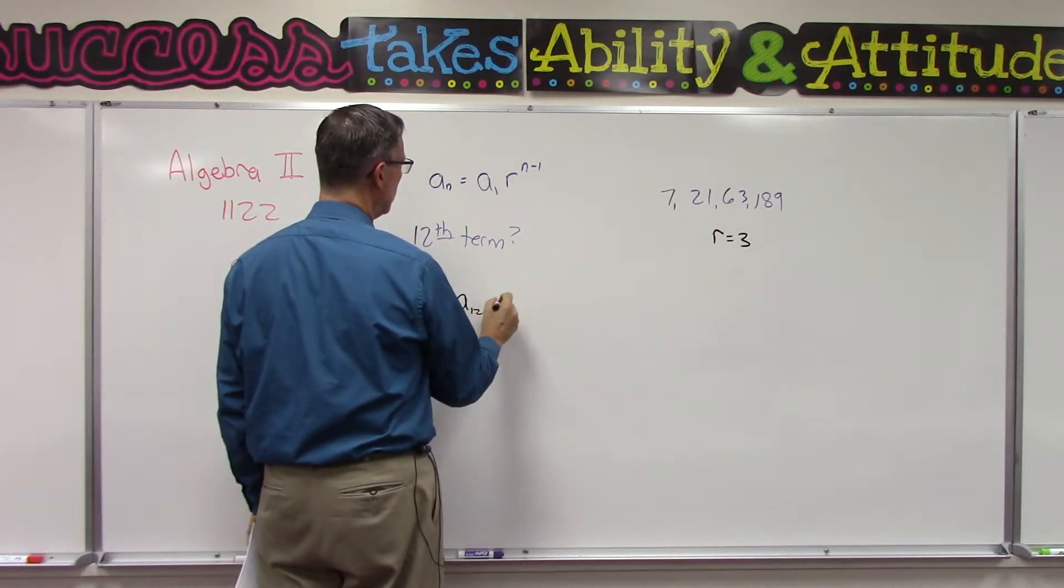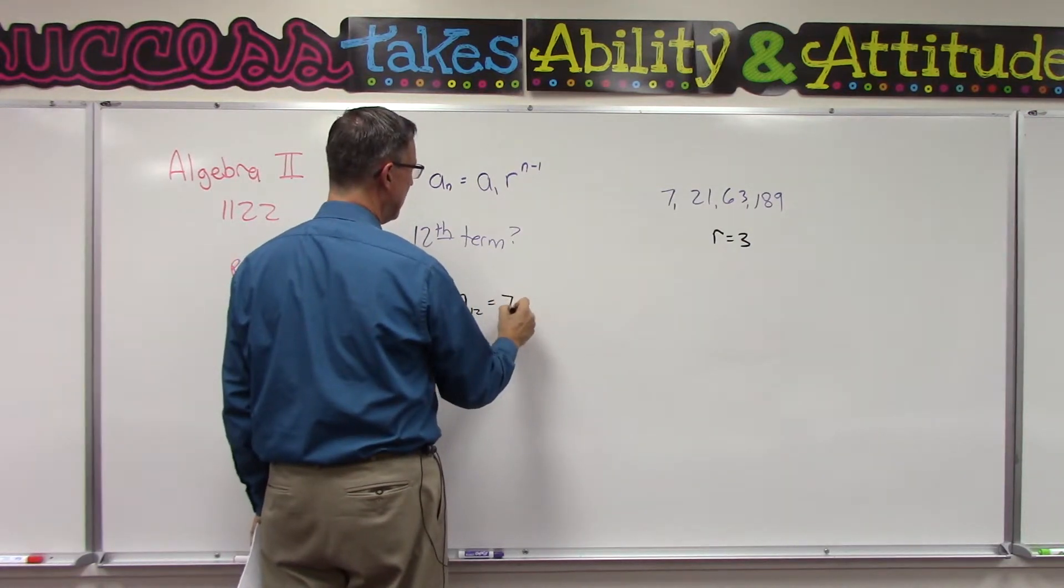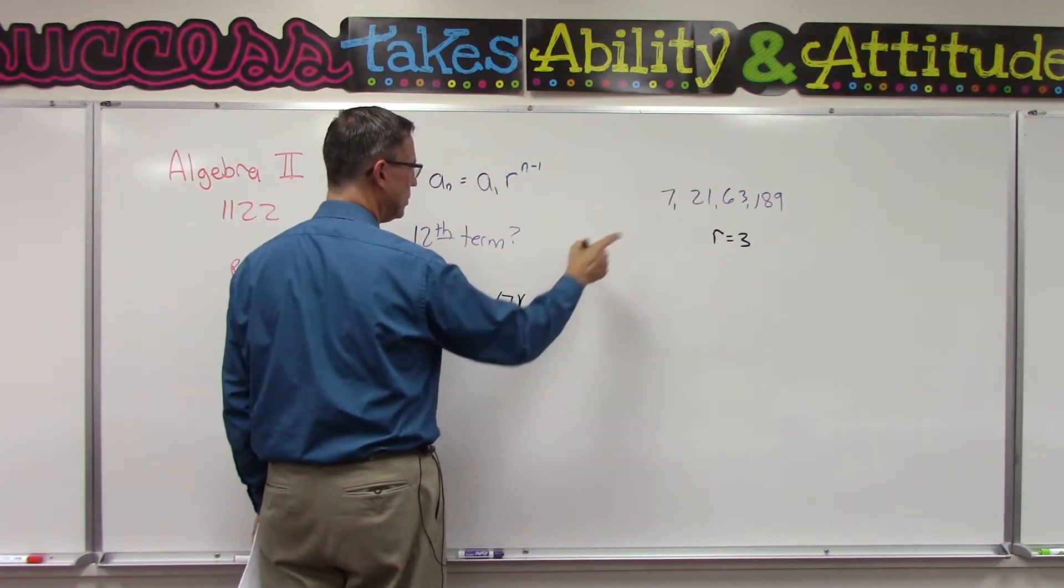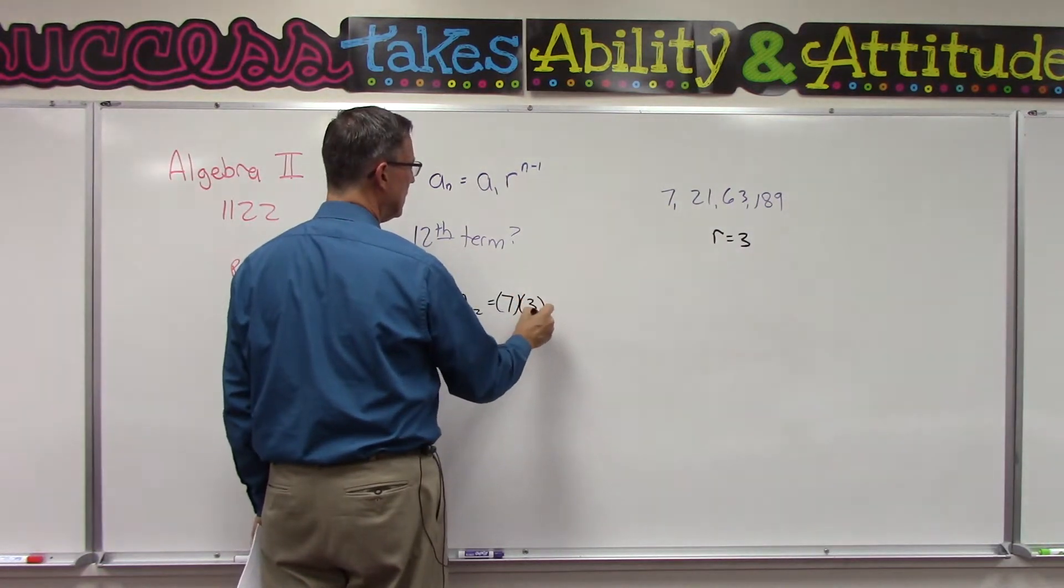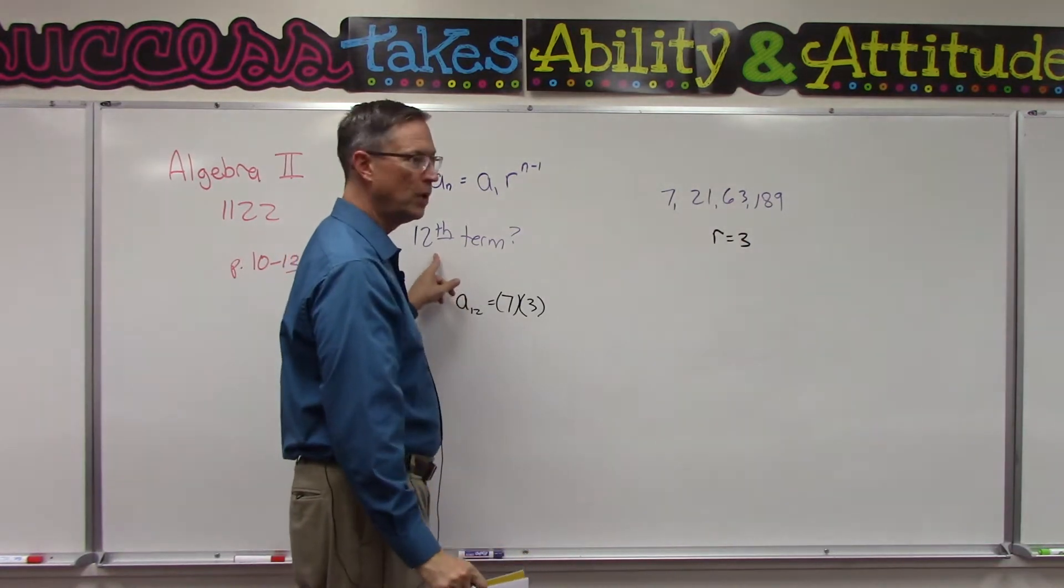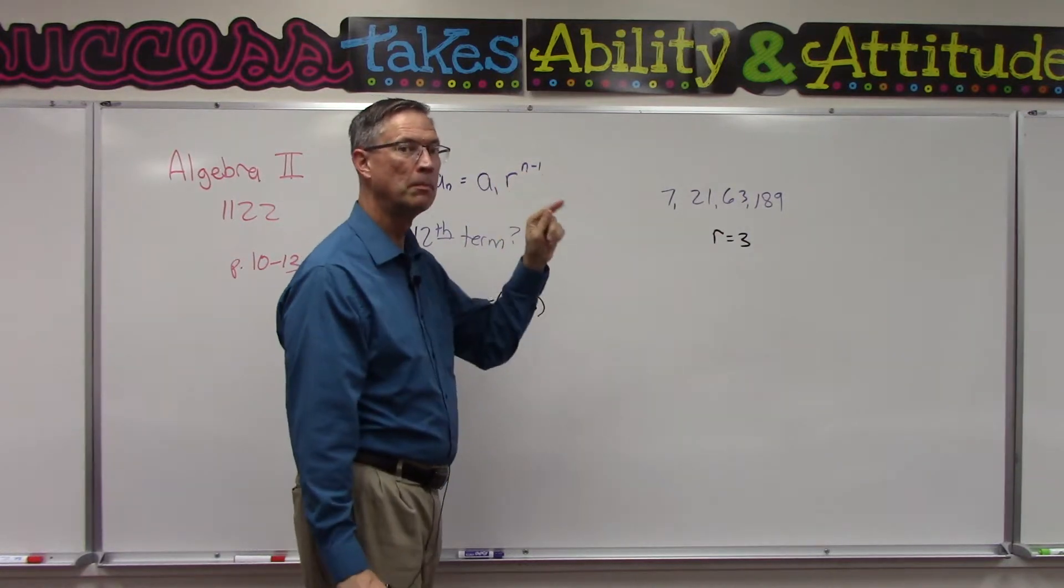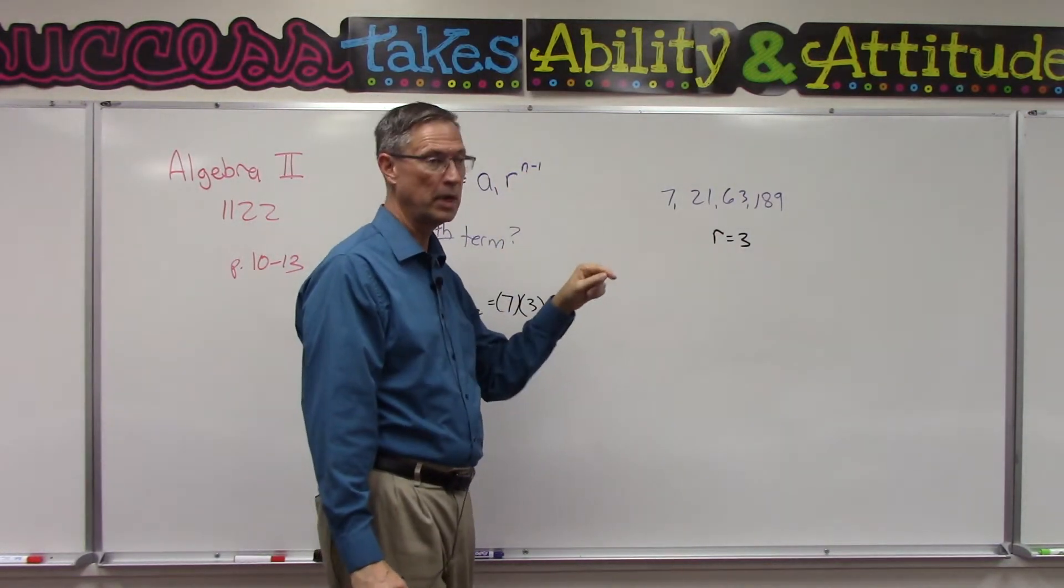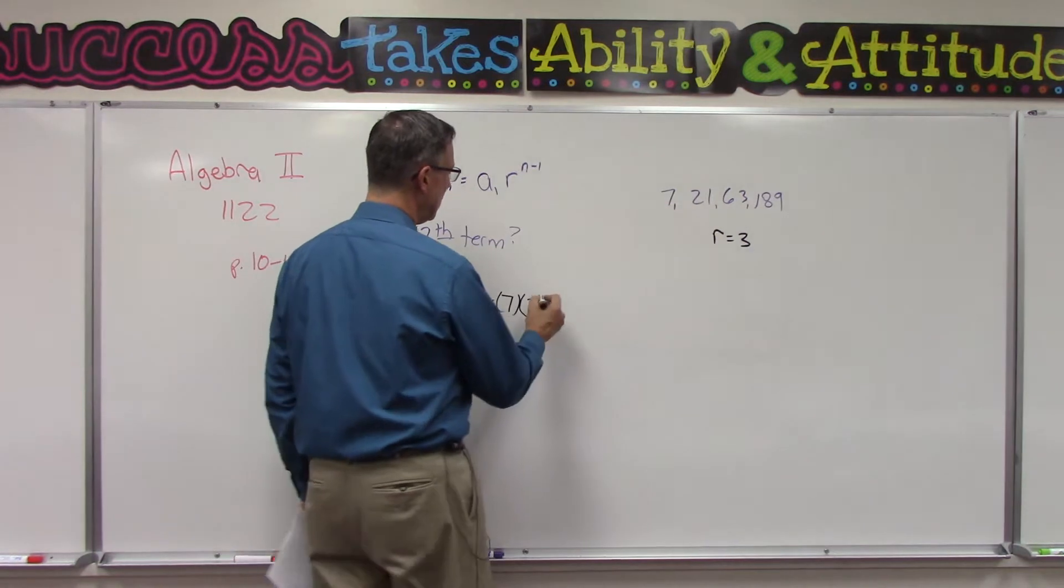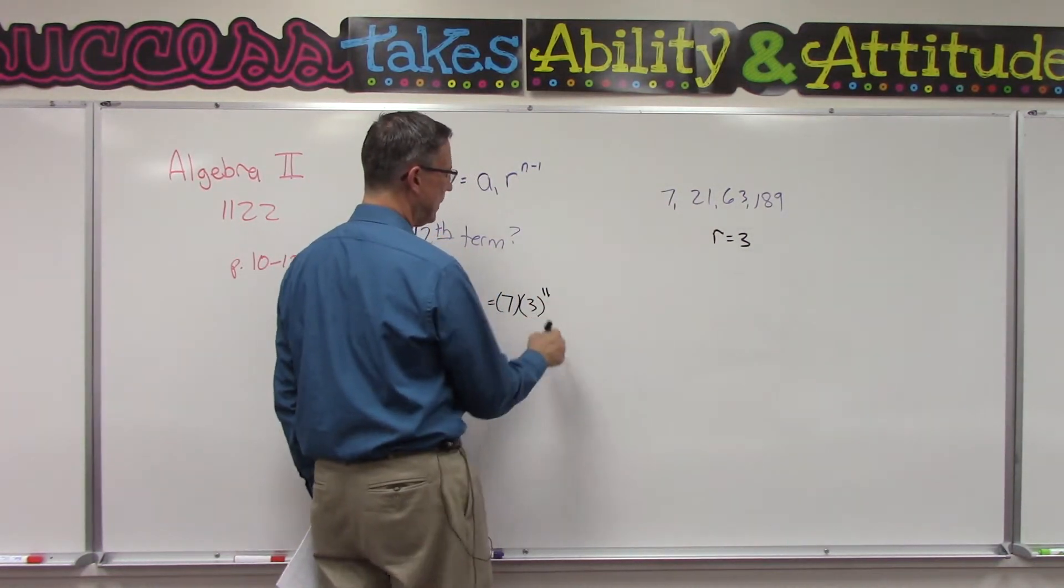Take the first term, which in this case is 7, times the ratio, which is 3. Now because I want to find the 12th term, I don't use an exponent of 12, but I actually do 12 minus 1. So I'm going to multiply this to the 11th power—3 to the 11th power.